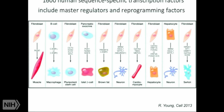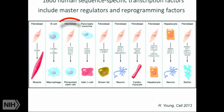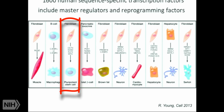They regulate every gene in the cell, including these master regulators and reprogramming factors, some of which you are very familiar with. For example, MYOD is the transcription factor that can switch a fibroblast into the muscle lineage. And the famous four — OCT4, SOX2, KLF4, and MYC — are the four Yamanaka factors that can reprogram a fibroblast into a pluripotent stem cell.